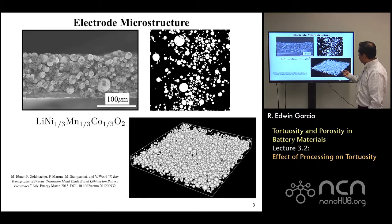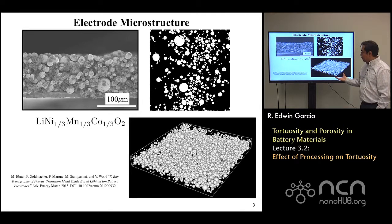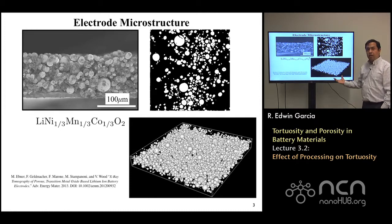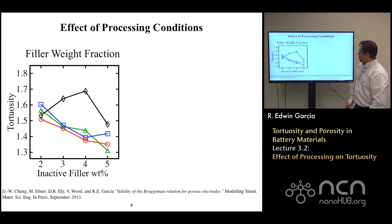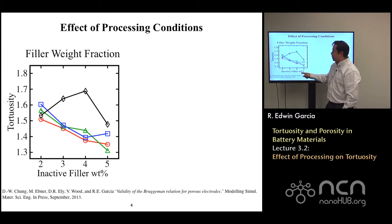What you have here now is a three-dimensional rendering of that particle distribution, also done by the group of Vanessa Wood and Martin Ebner. Even in this 3D representation, you can see the particles are not uniformly distributed, and the size of them, even if you assume they are perfectly spherical, should impact the result. So processing indeed makes an impact on the distribution of pores of the system. In collaboration with Ding Wenchang, they measured the tortuosity that material will deliver as a function of the filler.